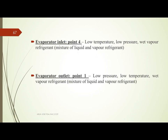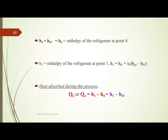The refrigerant condition at the inlet of the evaporator is low temperature, low pressure, wet vapor. The exit from the evaporator is also low pressure, low temperature, wet vapor refrigerant. To calculate how much heat is absorbed by the evaporator, we calculate enthalpy at points 4 and 1. H4 equals H3 equals HF3. H1 equals HF1 plus x1 times (HG1 minus HF1). Heat absorbed during this process is H1 minus H4, or H1 minus HF3.